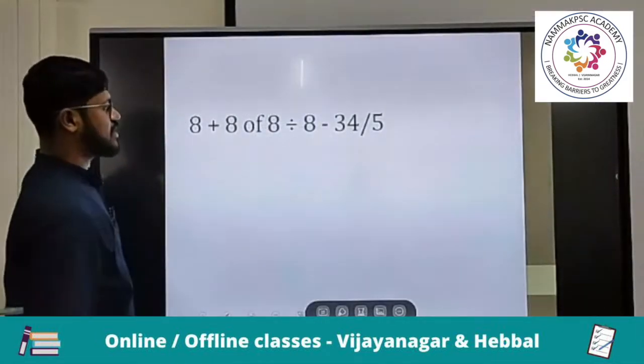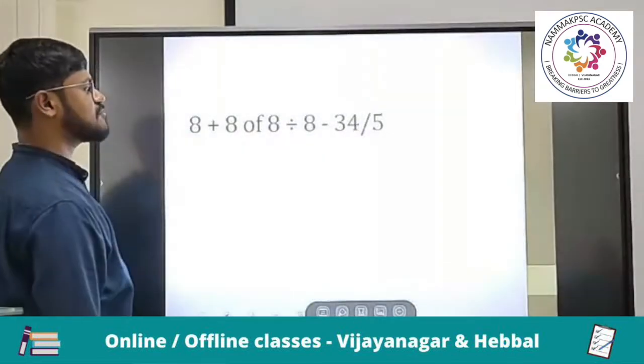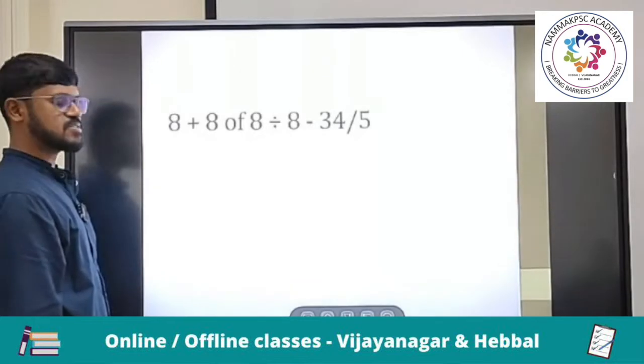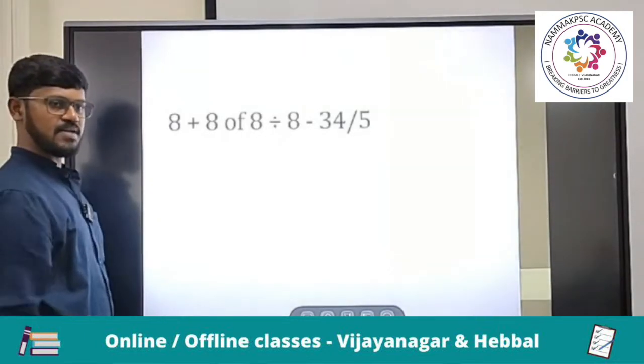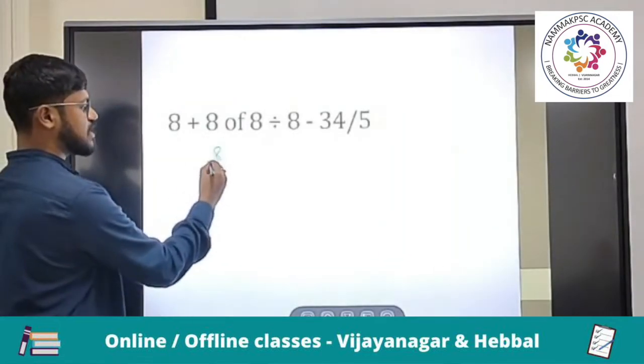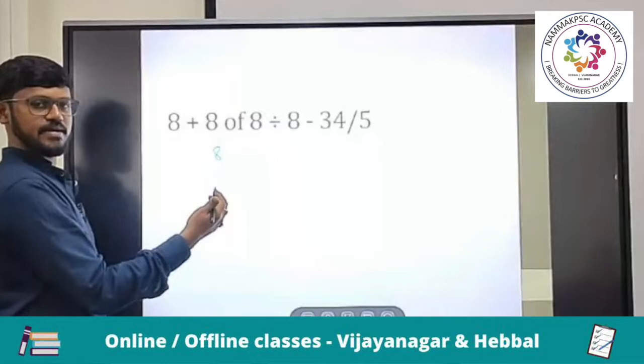8 plus 8 of 8 divided by 8 minus 34 by 5. What is this 8 of 8 now? Multiplication. 8 of 8 means what? Multiplication. 8. There is a fraction of 8. Whenever 8 of 8 comes, you just need to write 8 by 100 into 8.